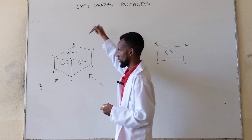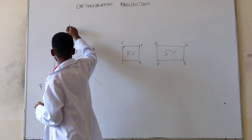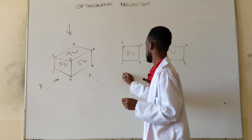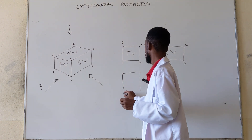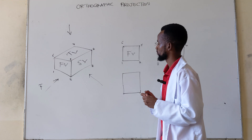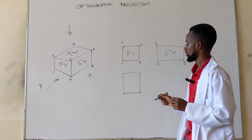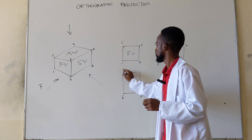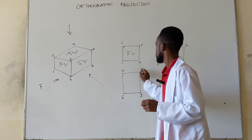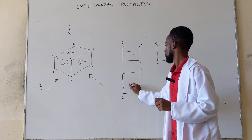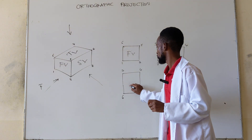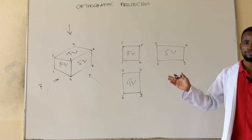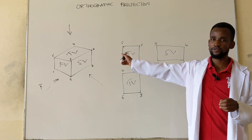When you look at it from the top, you'll be able to see something like this. You're going to see corners 6, 5, 7, and 4 — which is the top view. So these are the orthographic views for that object.